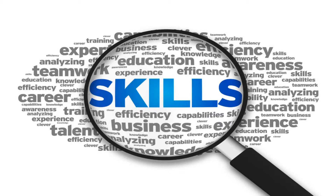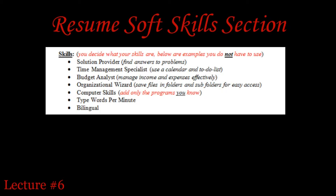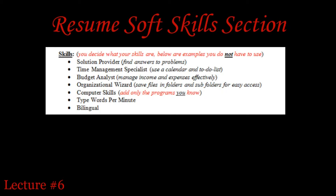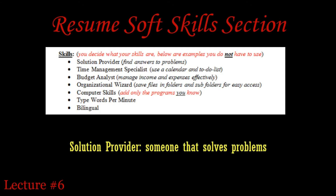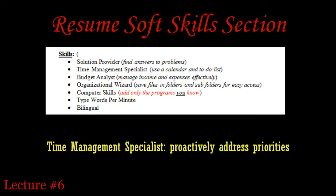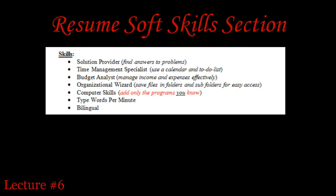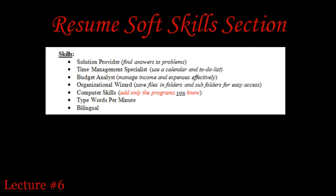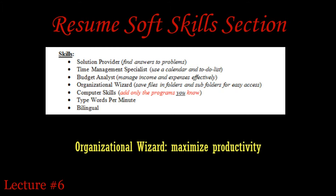The soft skills section is where you begin to separate yourself from the competition. The soft skills I use in this lesson are eye-catching and enticing. The titles I created address an employer's checklist of skills they're looking for in an employee. In the first bullet, I use the word 'solution' to exude confidence in my ability to get the job done right, and I use parentheses to further explain what a solution provider is. My second bullet reveals my understanding of the value of time and my knowledge about applications and technology. Expressing my understanding of budgets in the third bullet lets an employer know I add value to the company. Being organized is vital to working smart and increasing productivity — that's what the fourth bullet addresses.